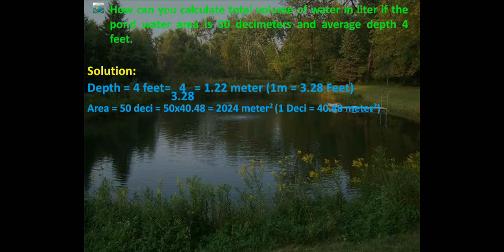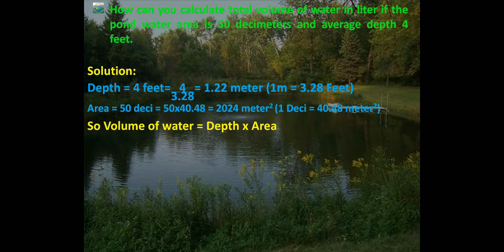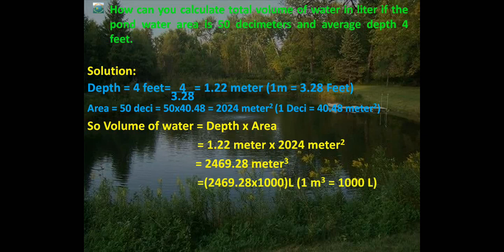Now converting depth into meters. Depth = 4 feet = 4 ÷ 3.28 = 1.22 meters. We know 1 meter equals 3.28 feet. So volume of water = depth × area = 1.22 meters × 2024 square meters = 2469.28 cubic meters.